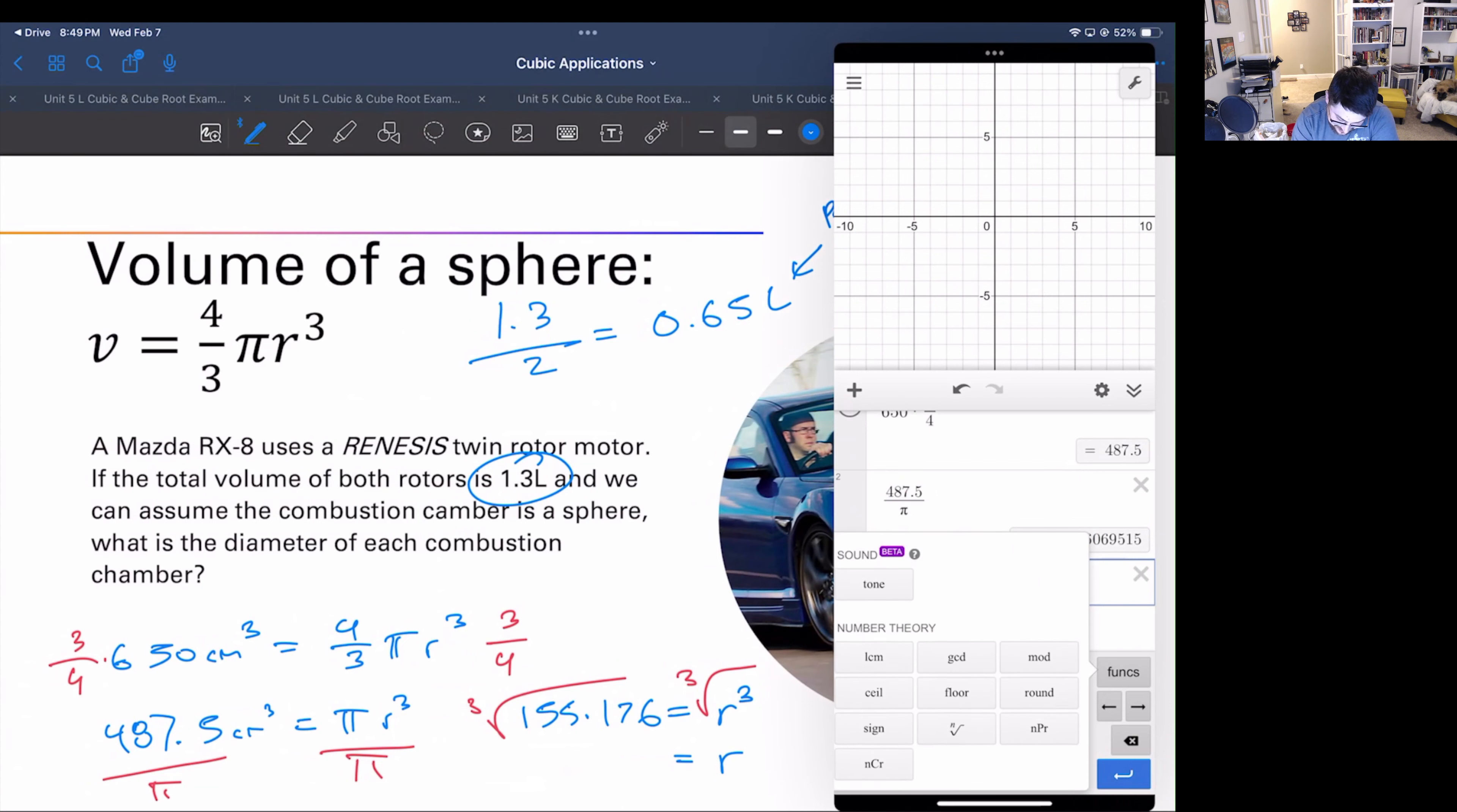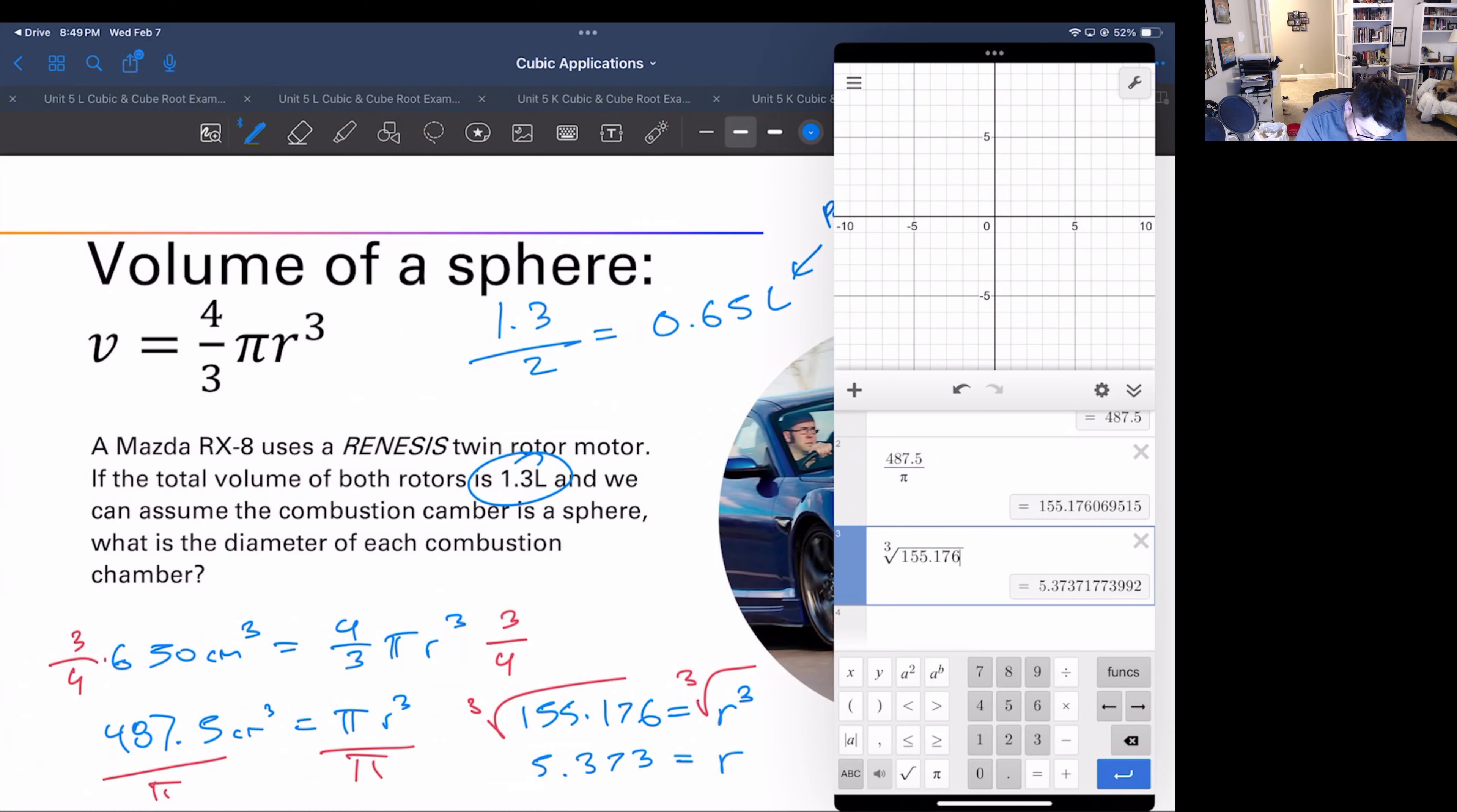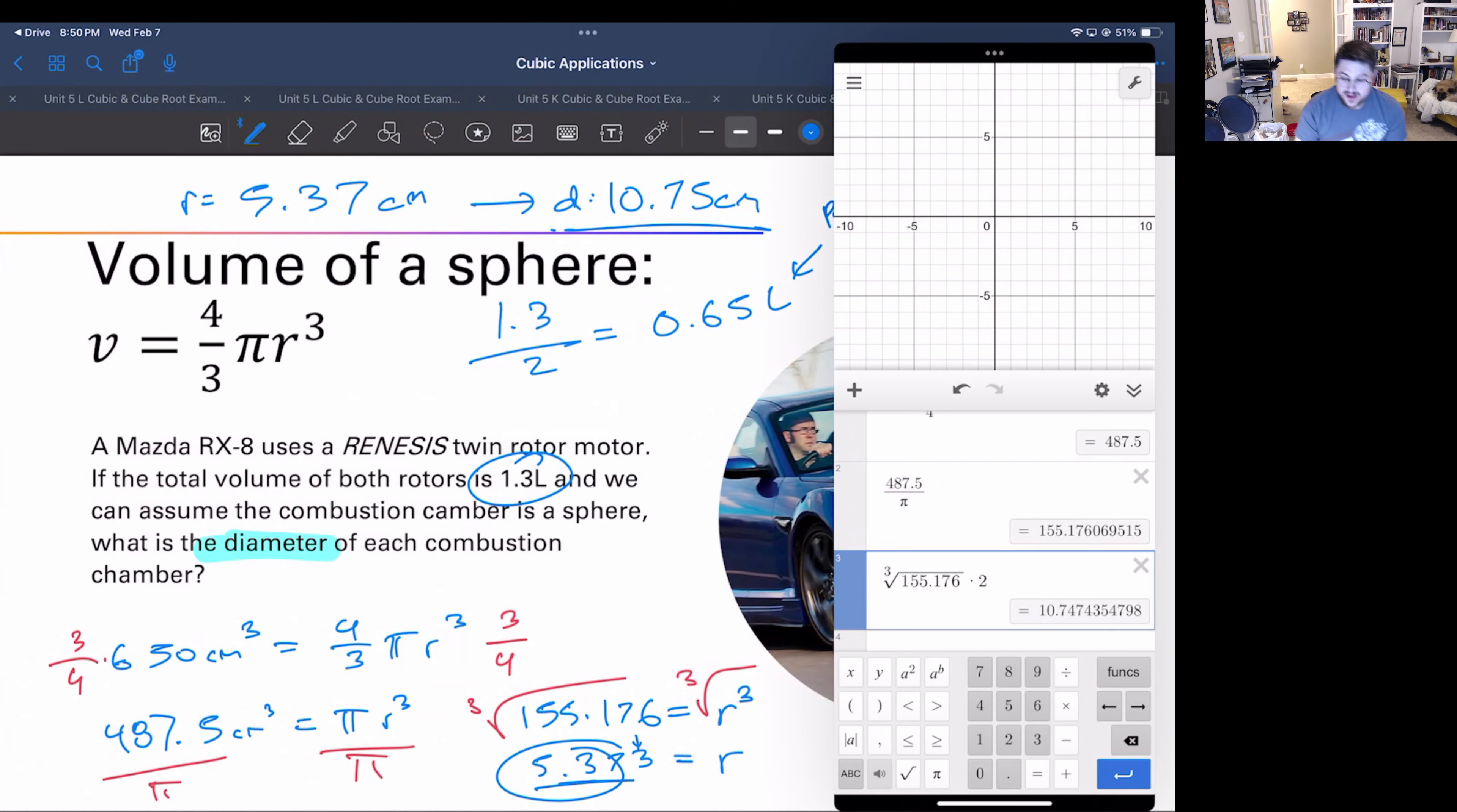Well, go through this, 155.176, 5.373 blah blah blah, so 5.37 because three rounds down. So 5.37 centimeters is the radius. Now that's our radius, not actually what we asked for because we asked for the diameter. Let's take that, let's just multiply it times two, and so that means our diameter is 10.7, or 10.75.